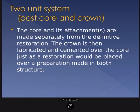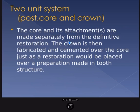Posts can be used in a two-unit system or a one-unit system. In the two-unit system, the post and core are made separately from the definitive restoration — the crown — which is then fabricated and cemented over the core, just as a restoration is placed over a tooth preparation. You build the post and core, then prepare the core like a tooth preparation, and then make and place the crown separately.